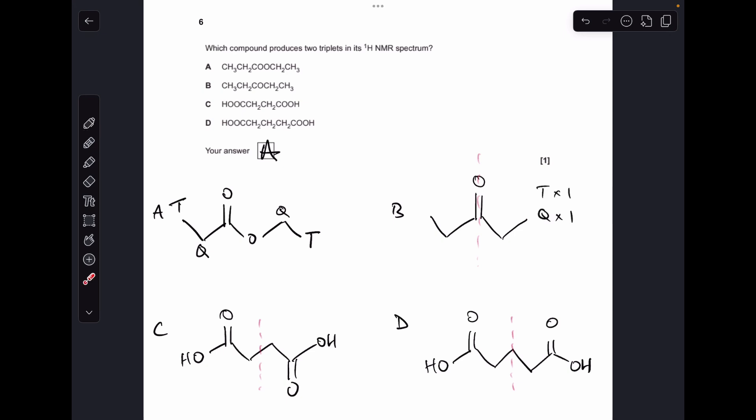In option B, because you've got the line of symmetry down here, you're actually only going to see one triplet for these protons here. They're the same as those, so one triplet and one quartet for these protons here because of what they're adjacent to.